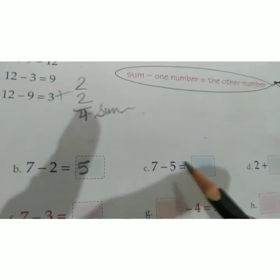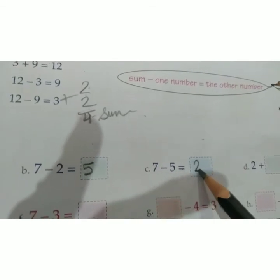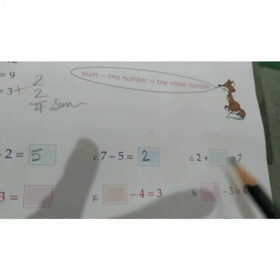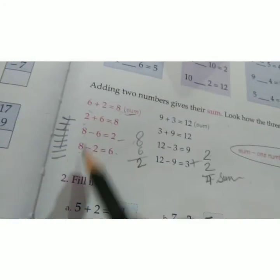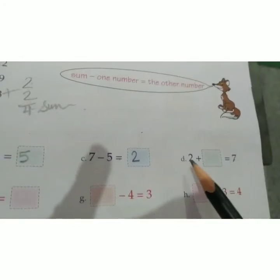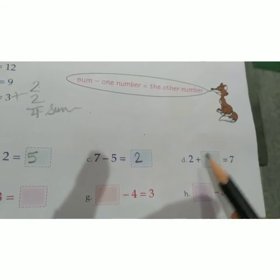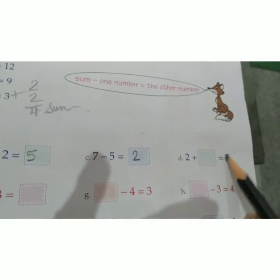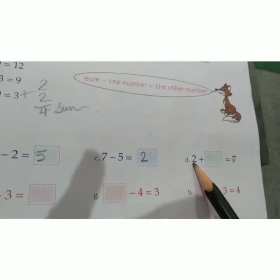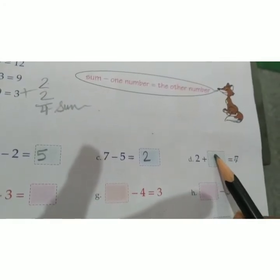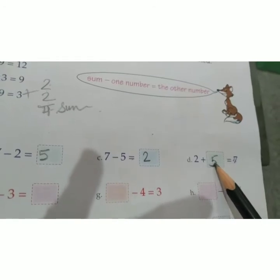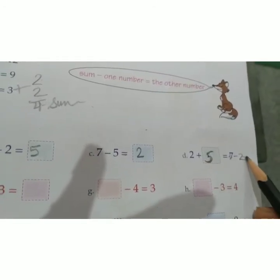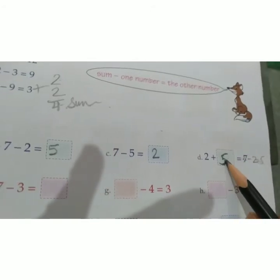Next: 7 minus 5 equals 2. Now: 2 plus blank equals 7. To find the missing number, subtract 2 from 7 — 7 minus 2 equals 5 — so fill in 5 here.